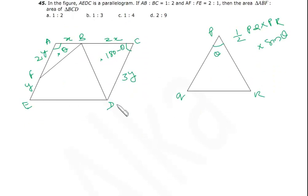Area of triangle AFB: that will be half sine theta into 2y into x, or x into 2y.